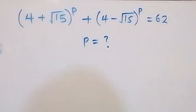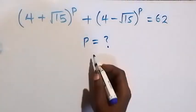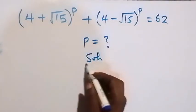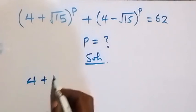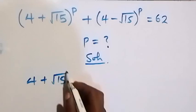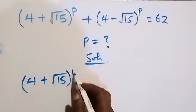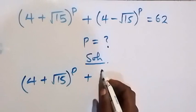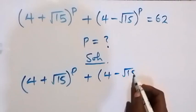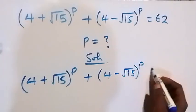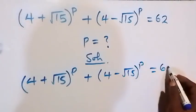Hello, you are welcome to solve this nice math problem involving square root. From what is given, which is (4 plus root 15) raised to power p, plus (4 minus root 15) raised to power p, equals to 682.